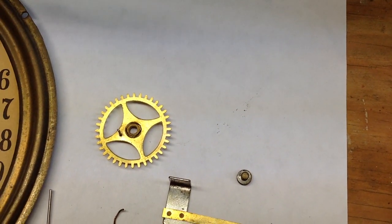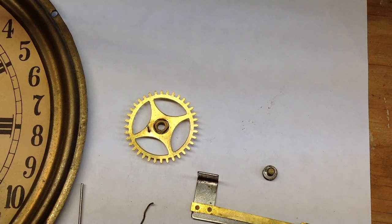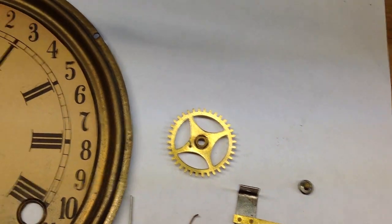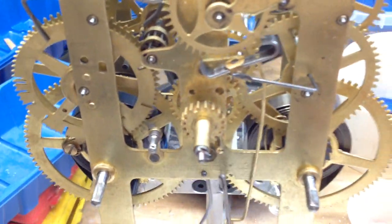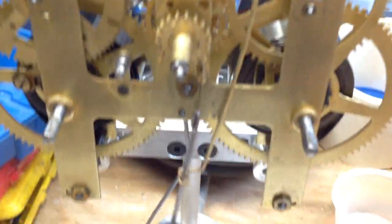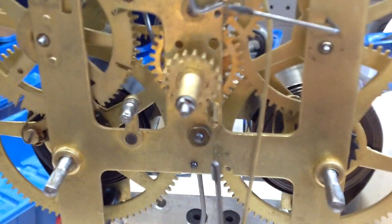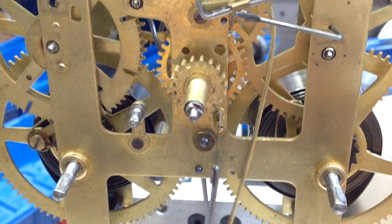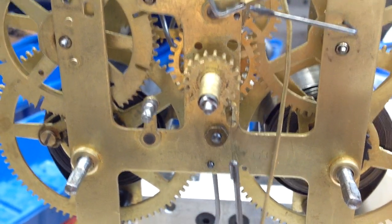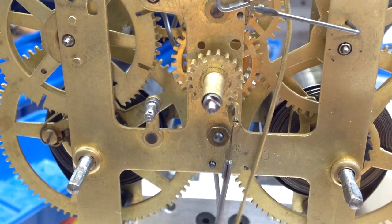This wheel goes on a post on the front plate. And then the center wheel here at the center of the picture, this center wheel has a pinion on it and to the left you can see the post where the other wheel goes.